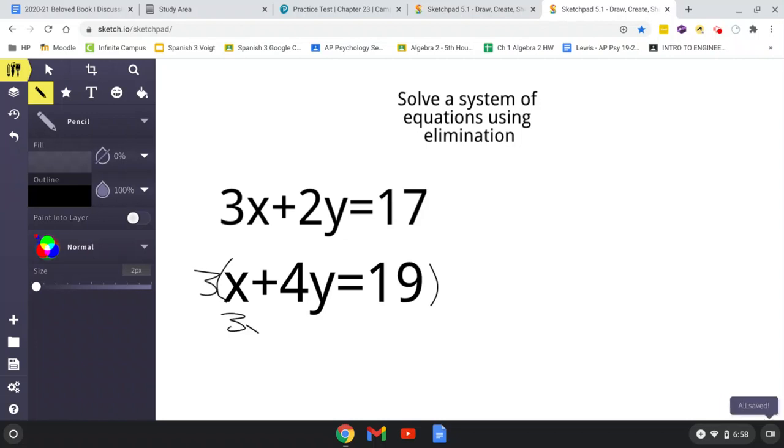So we're going to get 3x plus 12y equals—so you distribute all the way—now 3 times 19. Don't forget to multiply the 19 by 3, it's a common mistake—equals 57.